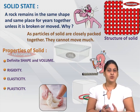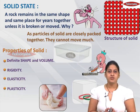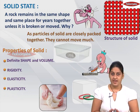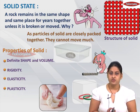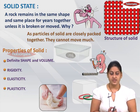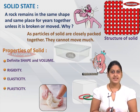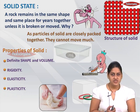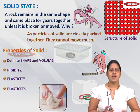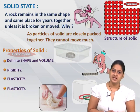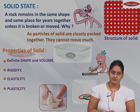So with this, we have listed down the properties of solids, where they have definite shape and definite volume. They have rigidity, they have elasticity, and they also have plasticity.